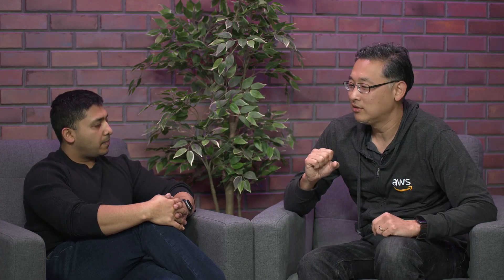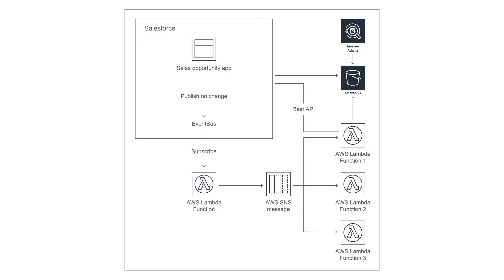What Salesforce provides is a messaging framework called platform events, and that's what they recommend if you want to do anything near real time. Platform events essentially put events onto a bus, and you just need a way to read off of that bus. You can implement that in any type of compute — EC2, Fargate, EKS, ECS — but Lambda is also a great option. Serverless: you don't have to manage any servers, just write code. Lambda is listening for a platform event.